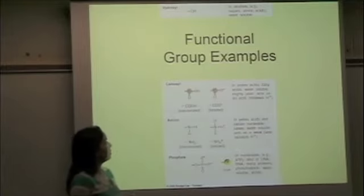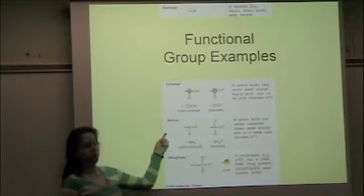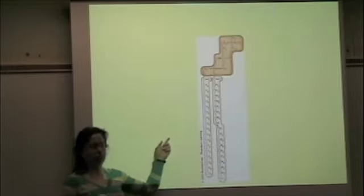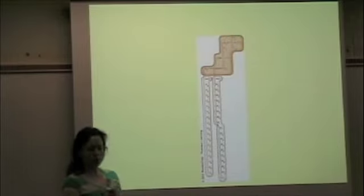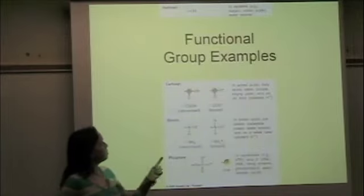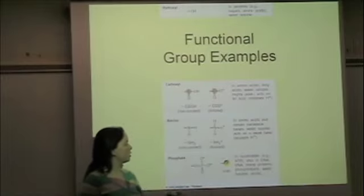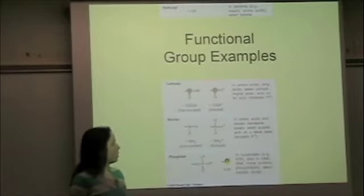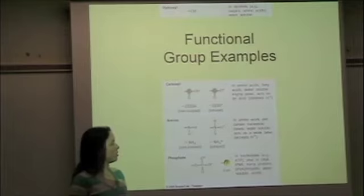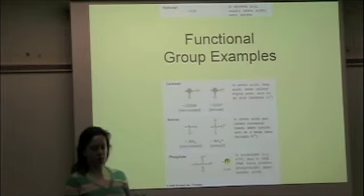The amino group is found in the amino acid, that's why it's called amino acid, building block of protein. It's nitrogen bonded to hydrogens. Two hydrogens or three hydrogens, they're both considered an amino group. It's also found in some of the nucleic acids, but always the proteins.